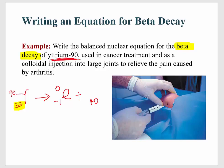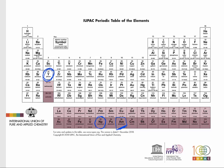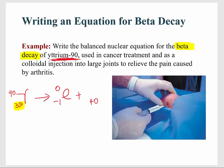Element number 40 is zirconium, symbol Zr. For the mass number, the total must be balanced on both sides: zero plus 90 gives us 90, matching the left side. So the daughter nuclide is zirconium-90, and that is the balanced nuclear equation for the beta decay of yttrium-90.